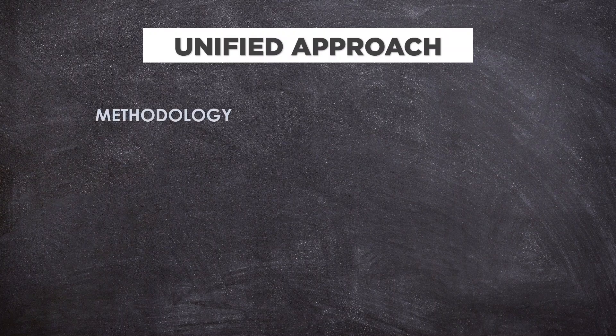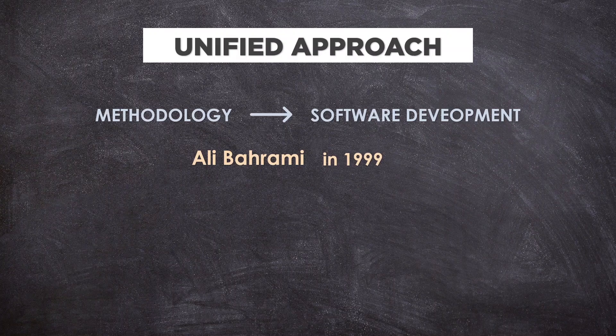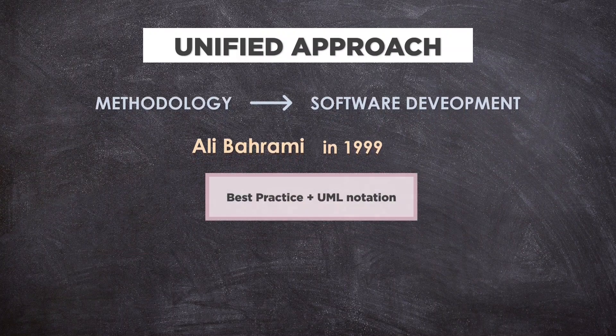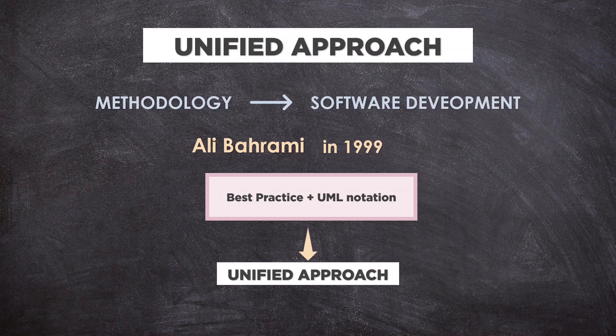Unified approach. The unified approach is a methodology for software development proposed by the author Ali Barami in 1999. It is based on methodologies by Booch, Rumbaugh, and Jacobson. The idea behind the unified approach is not to introduce yet another methodology. The main motivation is to combine the best practices, processes, methodologies, and guidelines along with UML notations and diagrams for better understanding of object-oriented concepts and system development.